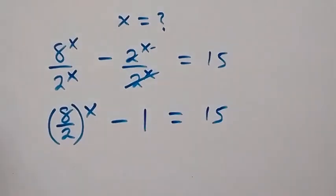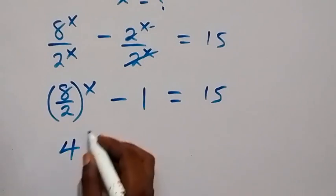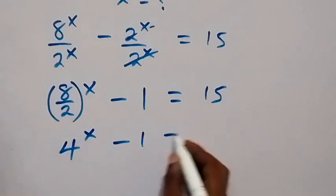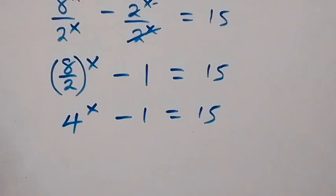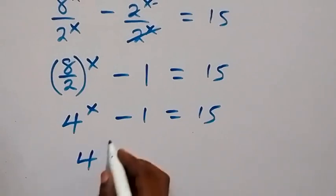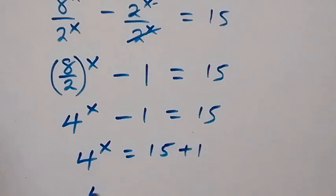Then we have 8 over 2, that's 4, so we have 4^x left here, then minus 1 which equals 15. So let's take minus 1 to the other side and it becomes plus. So 4^x now equals 15 plus 1, and that's 4^x equals 16.